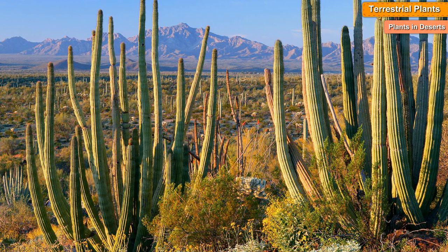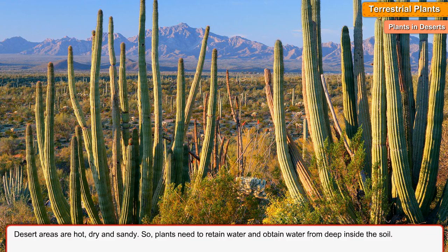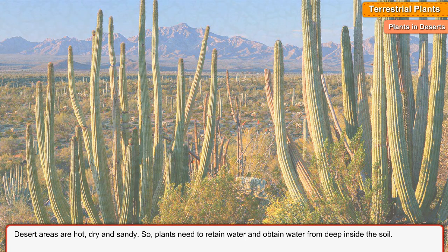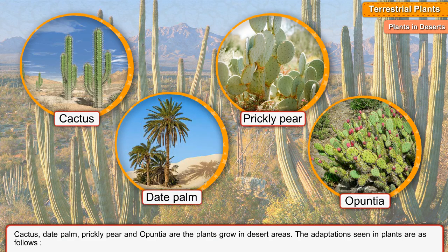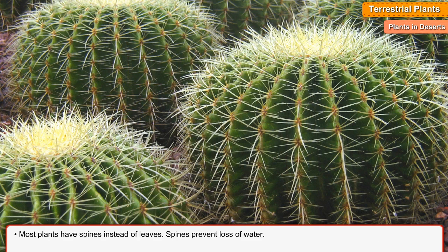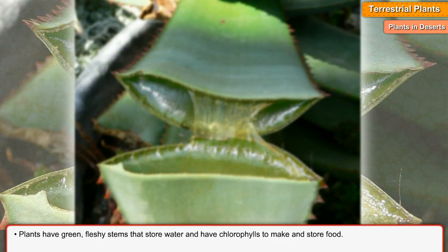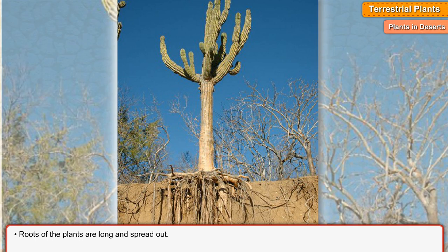Plants in Deserts. Desert areas are hot, dry, and sandy. So, plants need to retain water and obtain water from deep inside the soil. Cactus, date palm, prickly pear, and opuntia are plants that grow in desert areas. Plants have green, fleshy stems that store water and have chlorophyll to make and store food. Roots of the plants are long and spread out.